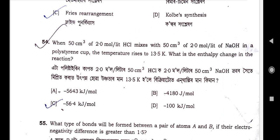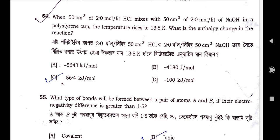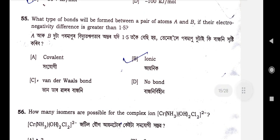Question number 54: When 50 cm³ of 2.0 mol/L HCl is mixed with 50 cm³ of 2.0 mol/L sodium hydroxide in a polystyrene cup, the temperature rises by 13.5 K. What is the enthalpy change? Option C is the correct option: –56.4 kJ/mol.